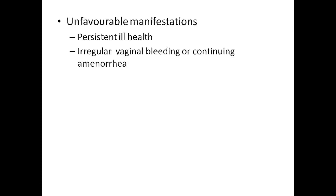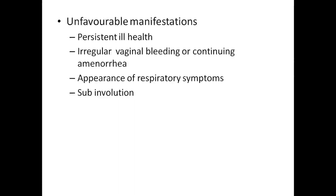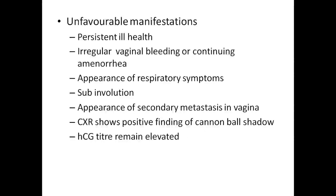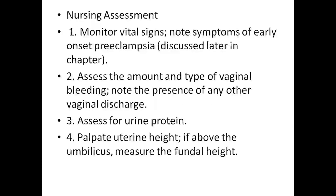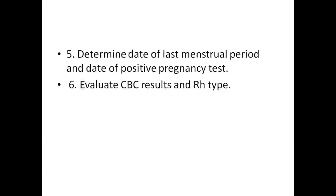Unfavorable manifestations include persistent ill health, irregular vaginal bleeding or continuing amenorrhea, appearance of respiratory symptoms, sub-involution, and appearance of secondary metastases in vagina. Chest X-ray shows positive findings of cannon-ball shadow; HCG titer remains elevated. Nursing assessment includes monitoring vital signs, noting symptoms of early onset preeclampsia, assessing the amount and type of vaginal bleeding, noting any other vaginal discharge, assessing for urine protein, palpating uterine height if above the umbilicus, measuring fundal height, determining the date of last menstrual period and date of positive pregnancy test, and evaluating CBC results and RH type.